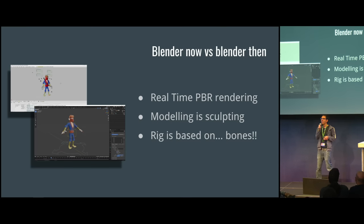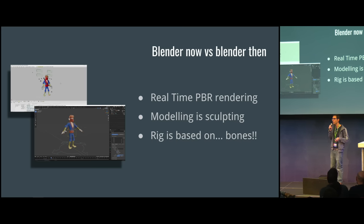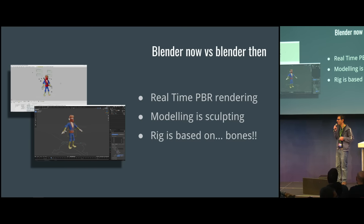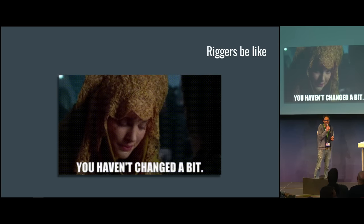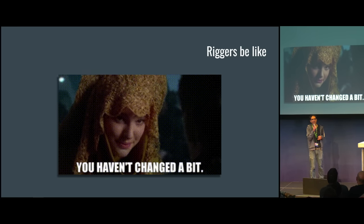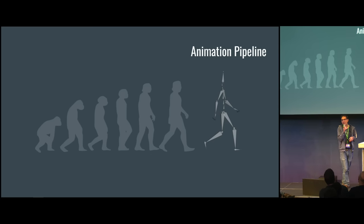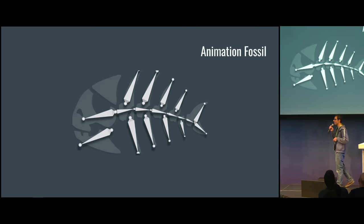If we think about it, the job of a modeler has changed so much — the job of a texture artist too. If we could take a time machine back to the nineties and start working on 3D, it would be completely different. We would need to readjust our workflow. But rigging is a time-travel compliant discipline because it doesn't change that much. That's the feeling. So how come everything changes and rigging stays the same? Perhaps rigging is the pinnacle of evolution. Or maybe it is a living fossil — something that is still around because mother nature forgot about it.